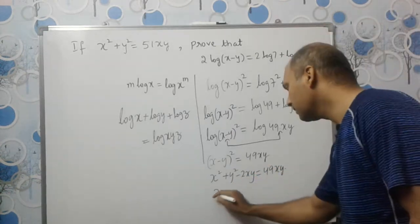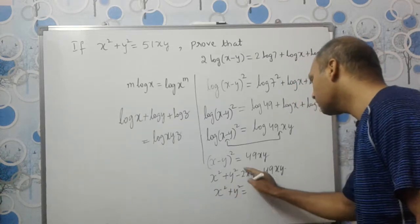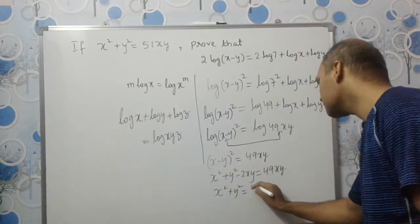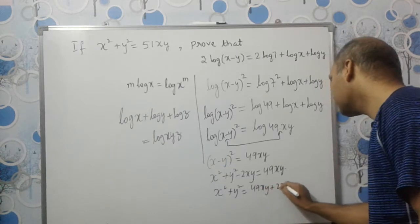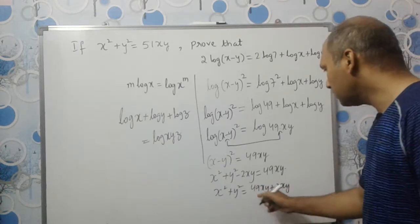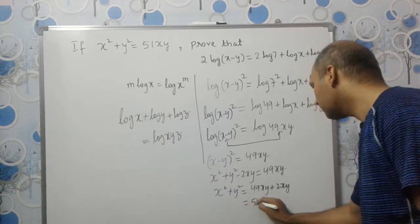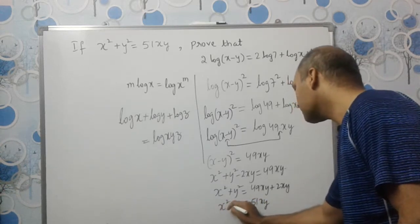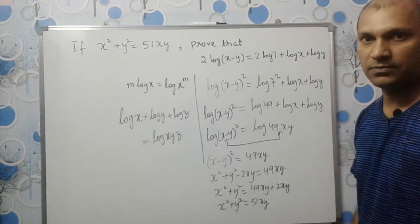Sending -2xy to the other side, it becomes +2xy on the right: x² + y² = 49xy + 2xy = 51xy. So we get x² + y² = 51xy, which is exactly the given condition.